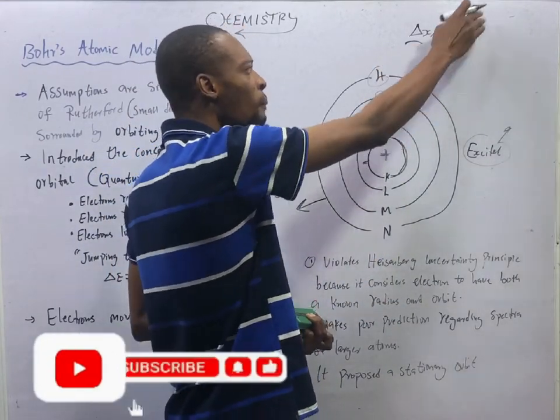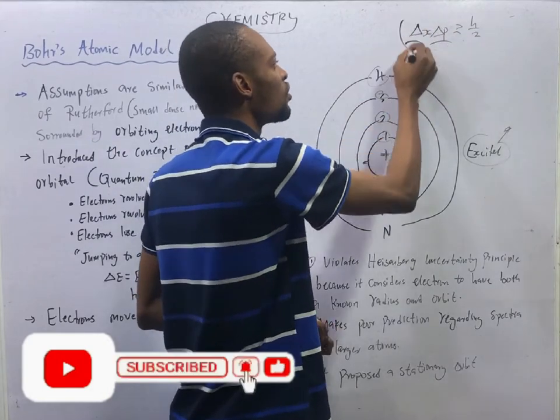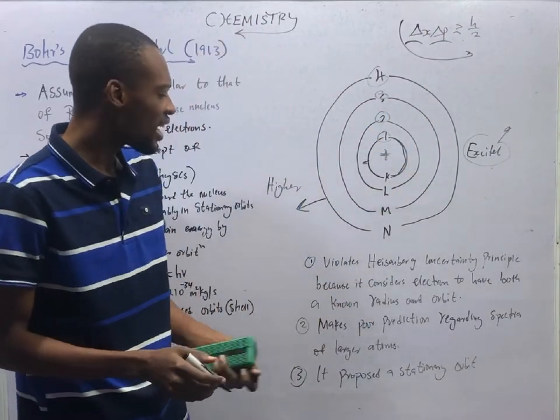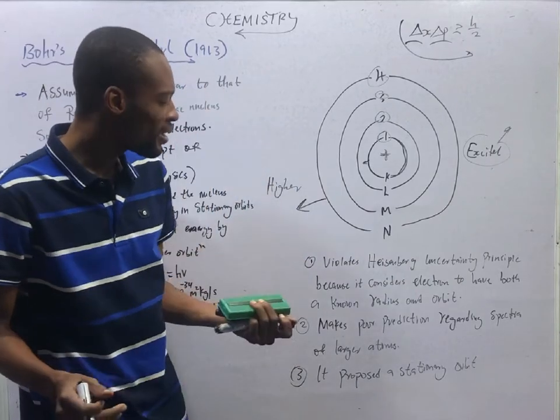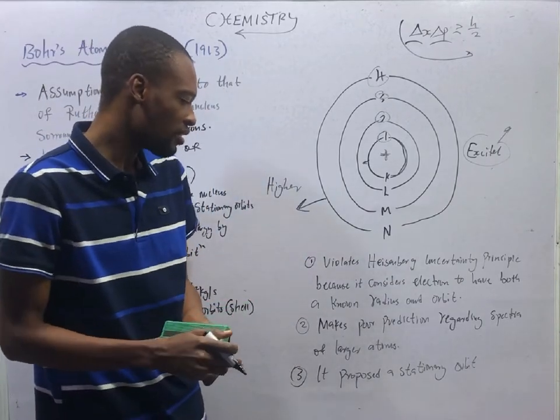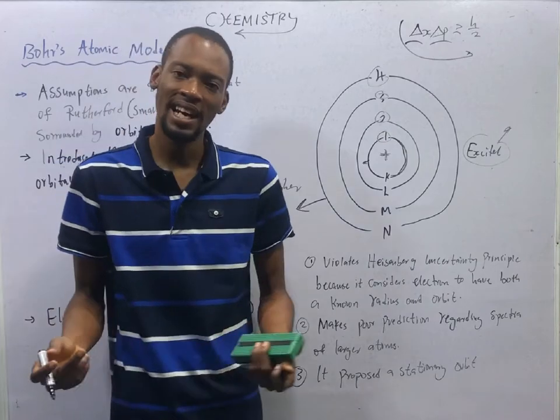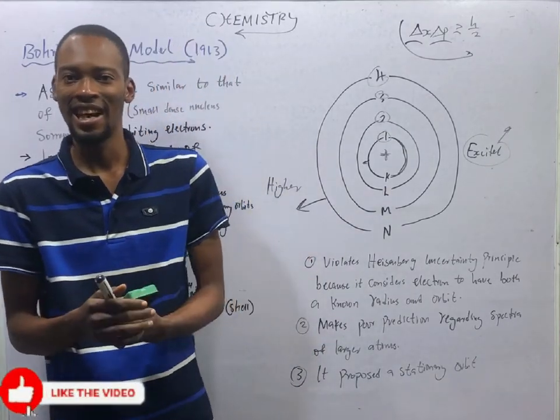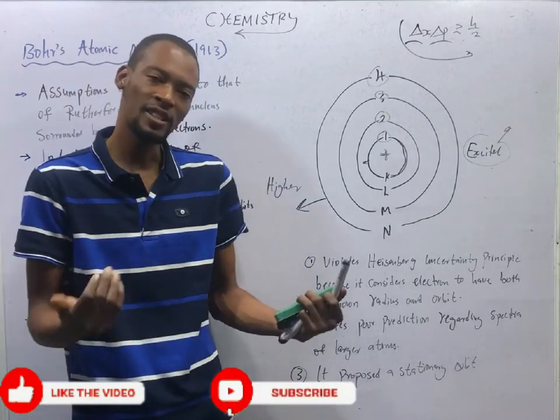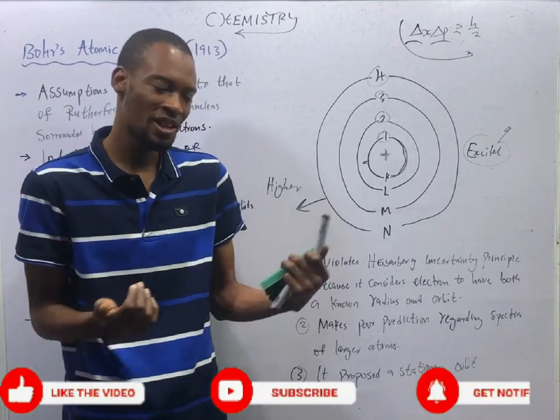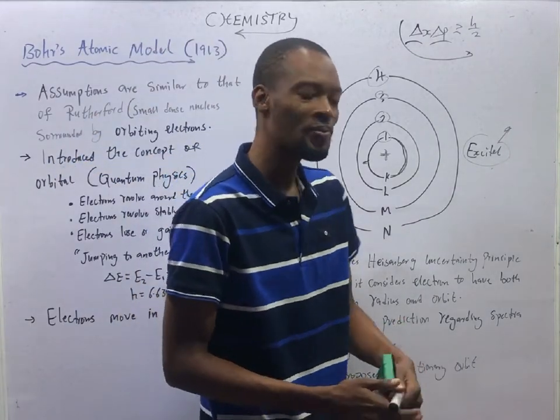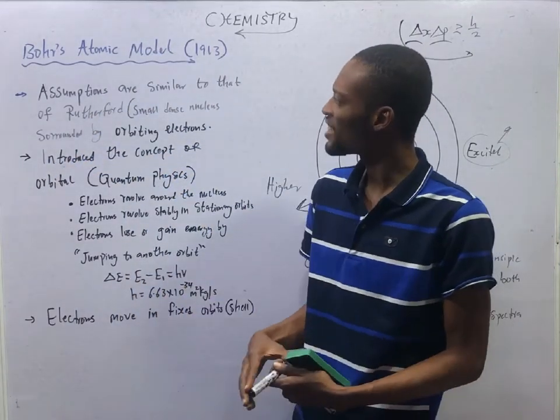Bohr made poor predictions regarding spectra of larger atoms. Although he was able to explain the lines seen in hydrogen spectrum, he could not explain or account for the spectrum of other elements. And it proposed a stationary orbit.